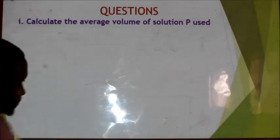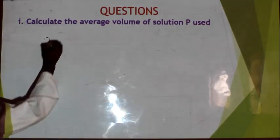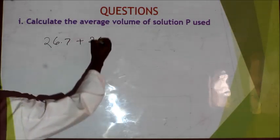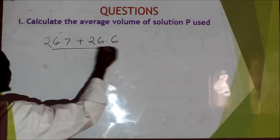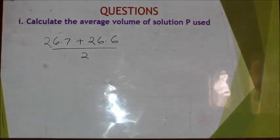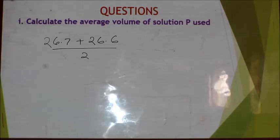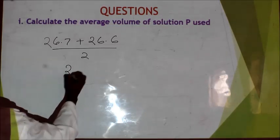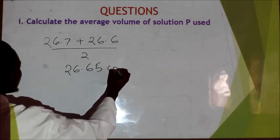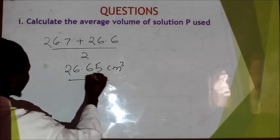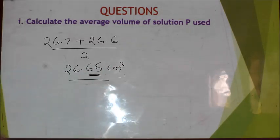So in this case my average volume is going to be 26.7 plus 26.6 divided by 2, because I have only taken two values to average. That gives you 26.65 cm³. Remember, when doing your calculations you go to two decimal places.